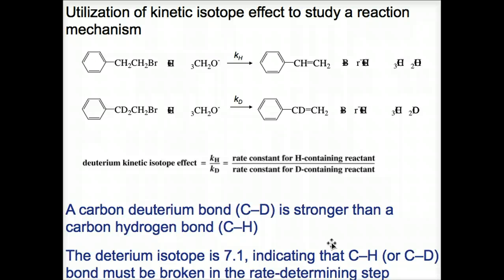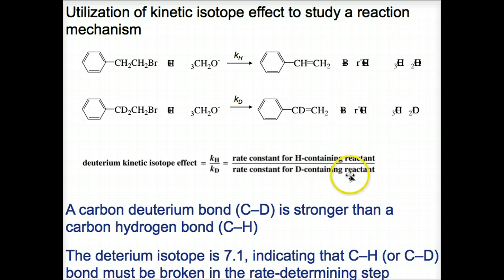The last topic is an experimental technique. Experimental evidence was used to derive the mechanisms of SN1, SN2, E1, and E2 reactions — that is the rates of the reaction, the relative reactivities of the reactants, and the structures of the products. The deuterium kinetic isotope effect is another useful experimental evidence that can be used to study a reaction mechanism. It is the ratio of the rate constant for a hydrogen-containing reactant divided by the rate constant for the deuterium-containing reactant — the rate constant for an identical compound in which one or more hydrogens has been replaced by deuterium, an isotope of hydrogen.